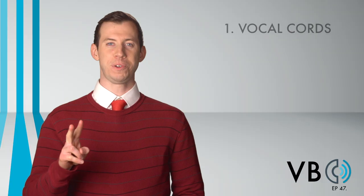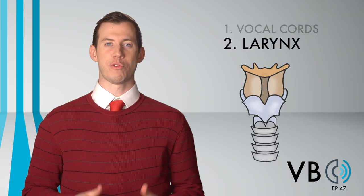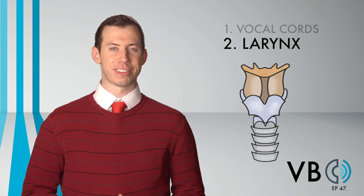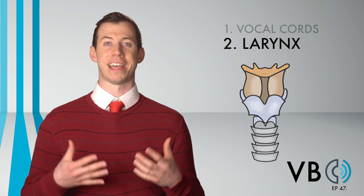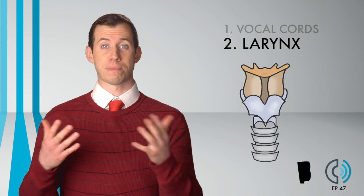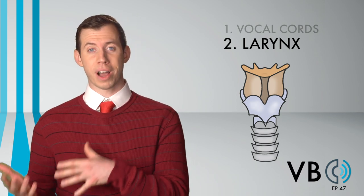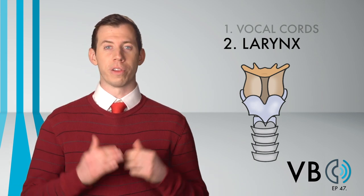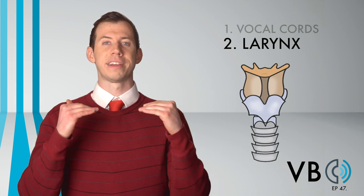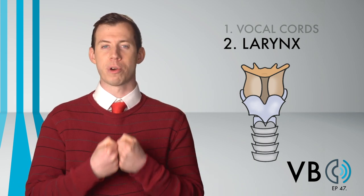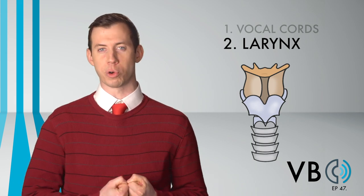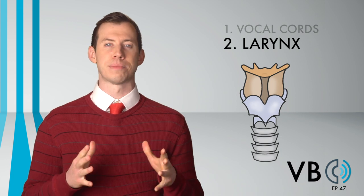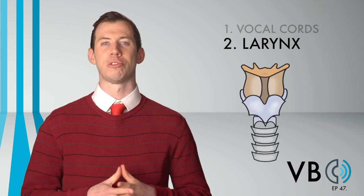Component number two: the larynx. If you have watched a lot of Voice Breakdown, you have probably noticed that certain components tend to go together. The soft palate tends to rise when the larynx lowers, for example. Or the higher the larynx, the easier it is to have stronger compression of the vocal cords. But this voice defies some of those conventional patterns, which makes it a bit challenging.